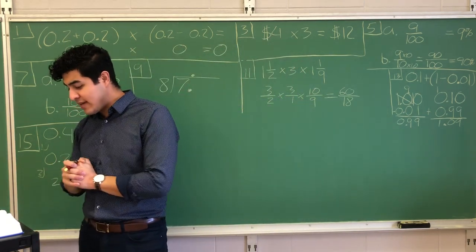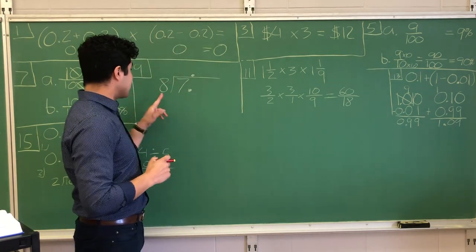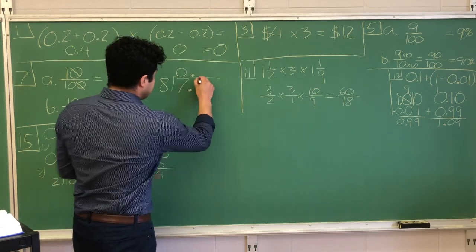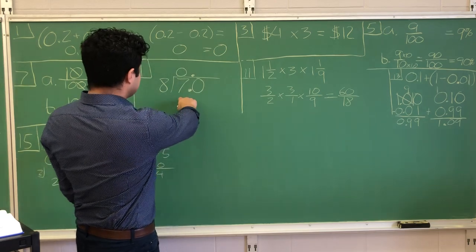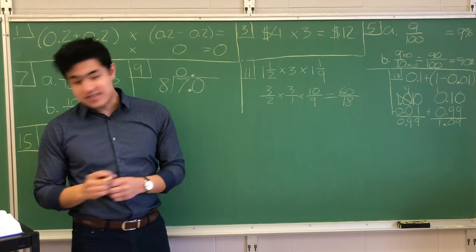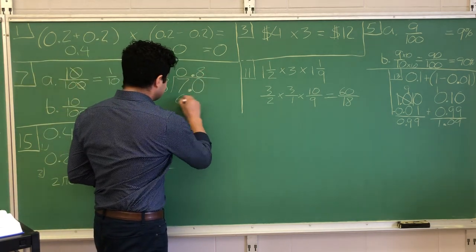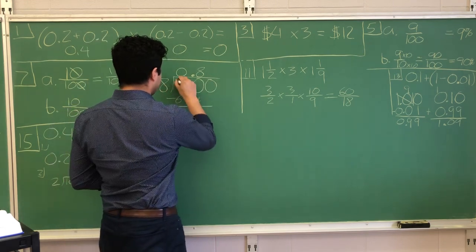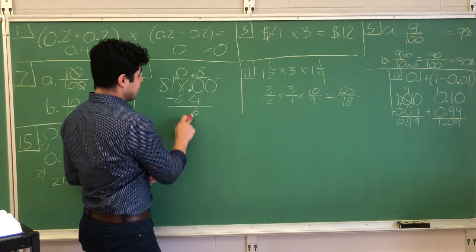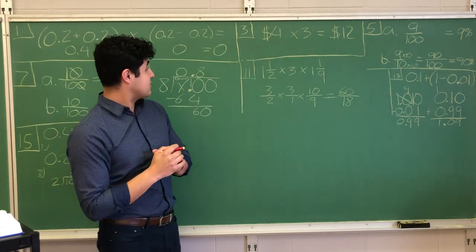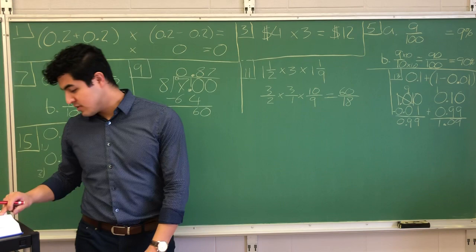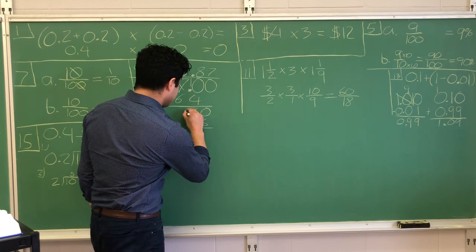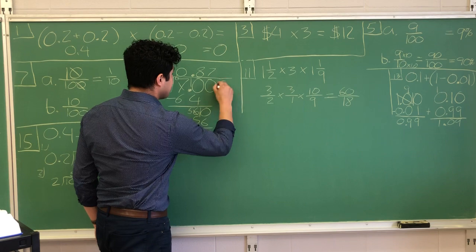Number nine. Write seven eighths as a decimal number. I went ahead and set it up. The denominator becomes the divisor. The seven becomes the dividend. Eight does not go into seven. So I write a zero and I add a zero here. Eight goes into 70. How many times? Let's see. Eight times. So eight times eight is 64. I go ahead and subtract that. And I'm going to need to add another zero here. So 70 minus 64 is six. That's my remainder. So I bring down the zero.